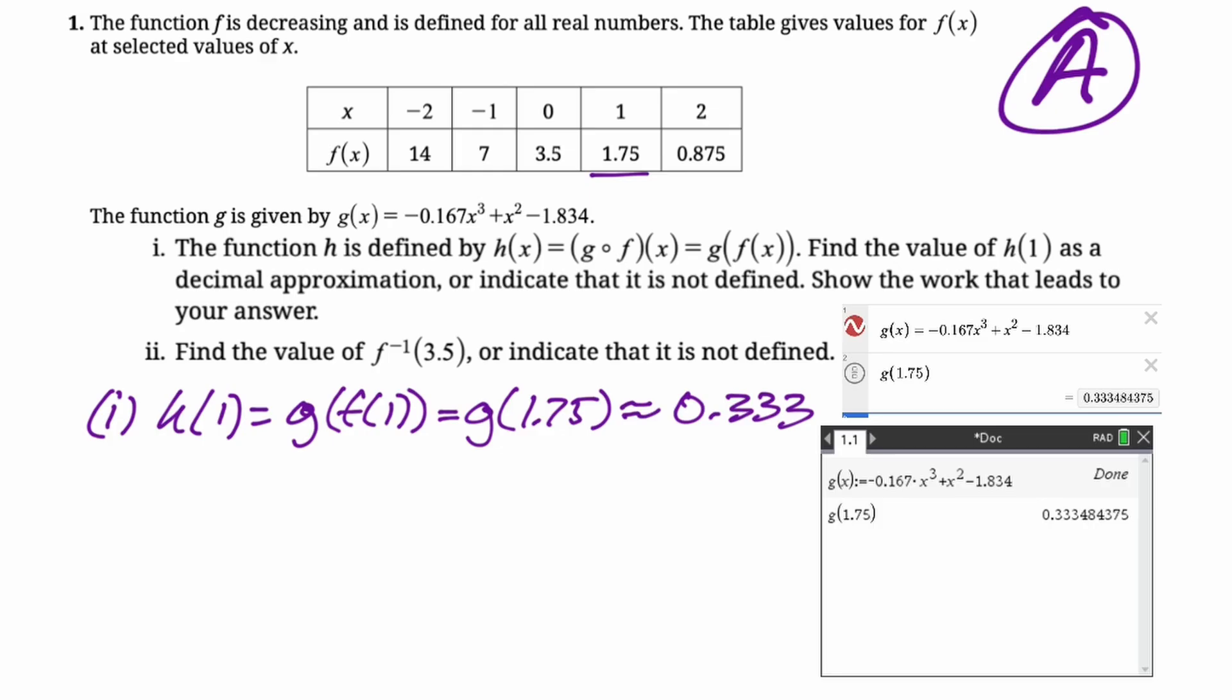Then we want to find the value of f inverse of 3.5 or indicate that it's not defined. So this is saying like the y value of f is 3.5. What is the x value that goes with that? So we're just going to look up at the table. We're going to say f inverse of 3.5, look at all the y values. You can see here's 3.5. It comes from x equals 0. So f inverse of 3.5 is 0.